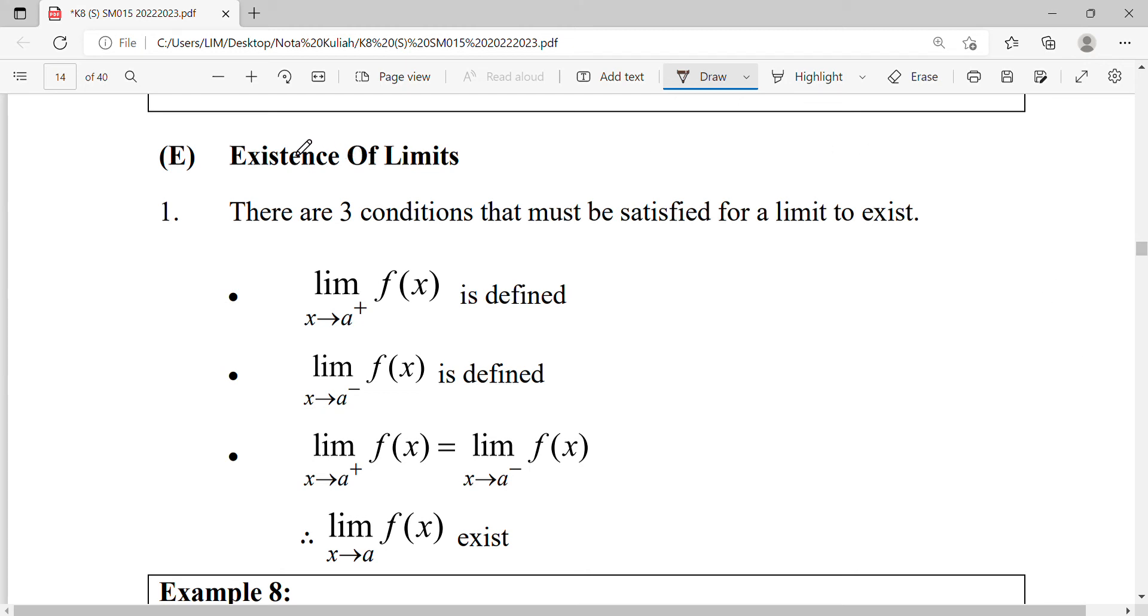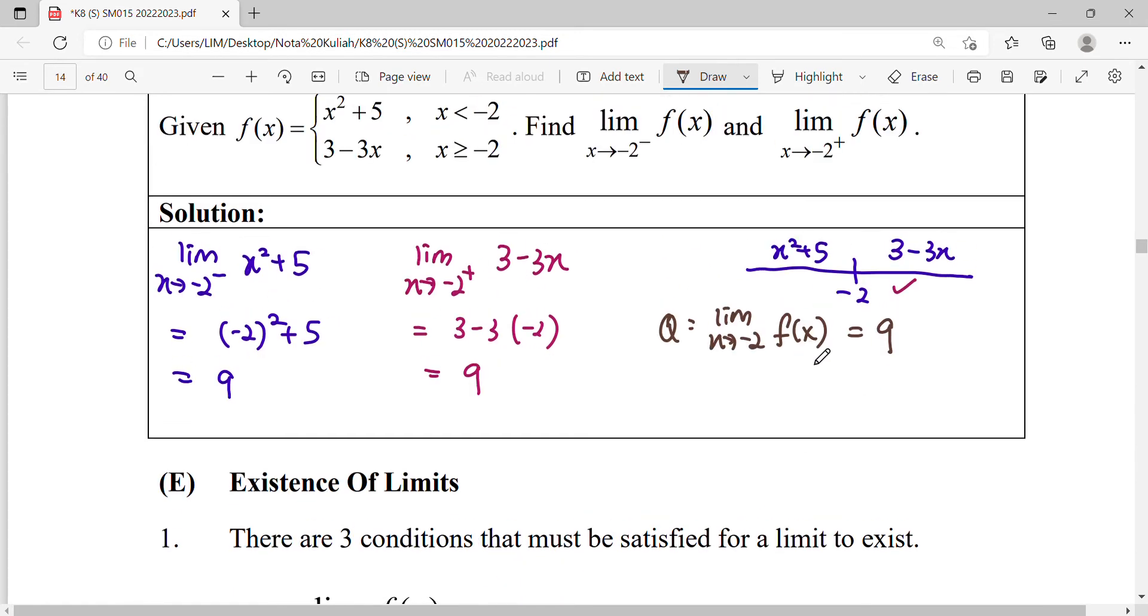Okay, so now we see the existence of limits. Like what we've done before, we will find the limit for a function where it approaches a point from the right-hand side and approaches the point from the left-hand side. If they are the same, then the limit exists with that value.